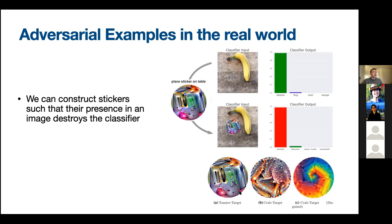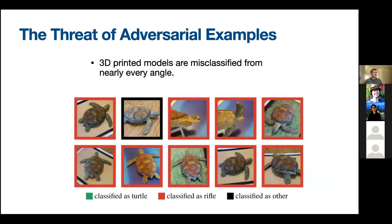Someone might say we can design an object detector to detect adversarial patches. But there's an even more latent threat model: 3D-printed and painted adversarial objects. There's no way to know this is adversarial, but this turtle was designed so that it's classified as a rifle — or in some cases something else — but never correctly as a turtle, despite being obviously a turtle to us. There are very realistic ways adversarial examples can be injected into prediction pipelines.